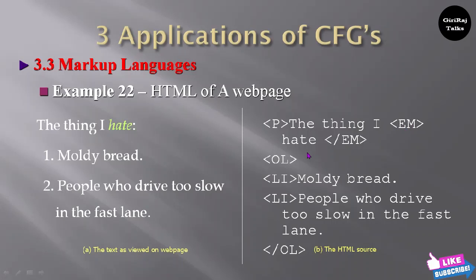The em tag is there — em tag is an emphasizing text tag. Within the em tag there is the word 'hate.' This hate word has been printed as italic font. To print italic font we use the em tag here — it emphasizes text within the paragraph. So this is about one kind of application of context-free grammar.